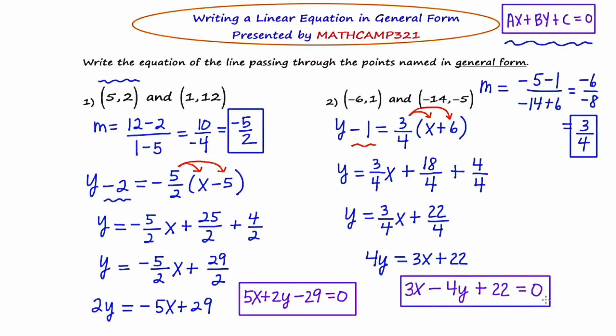So here are two examples of working with a problem that requires you to finish in general form. General form in summary is AX plus BY plus C equals zero where A, B, and C are integers. That means no fractions or decimals and A cannot be negative.